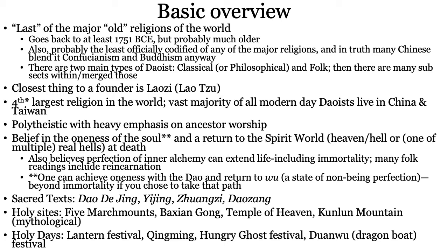Taoism is the fourth largest religion in the world, though that has an asterisk — technically the Chinese government won't acknowledge its citizens as being religious, due to communism's view of religion as the opiate of the masses. So we guess it has about 400 million followers, almost exclusively in China, making it the fourth largest. The vast majority of modern-day Daoists live in China and Taiwan, where it is thriving. It is unquestionably polytheistic — not like Hinduism where it claims monotheism — with a heavy emphasis on ancestor worship and multiple gods.